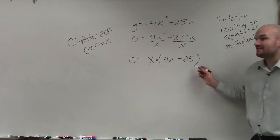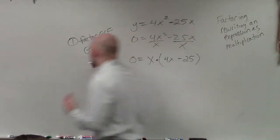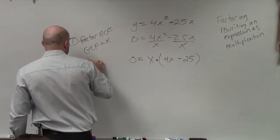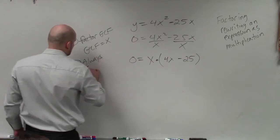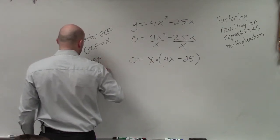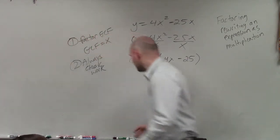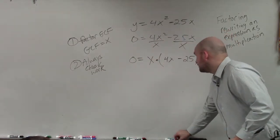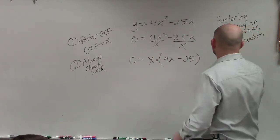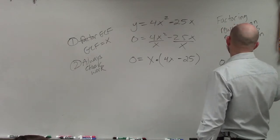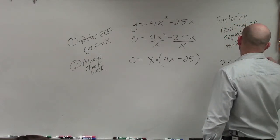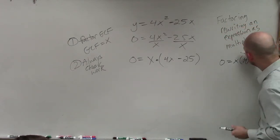So therefore, now I have this. Now again, the other thing I want you guys to do is always check your work. You guys can determine if this is correct or not. How? You can apply distributive property. 0 equals x times 4x minus 25. Apply distributive property.